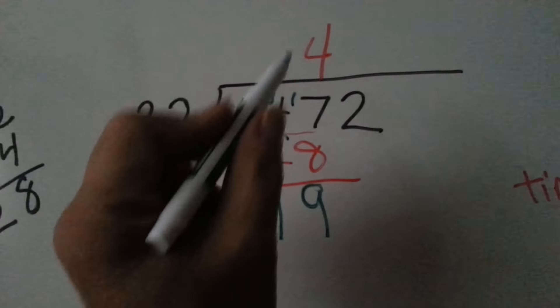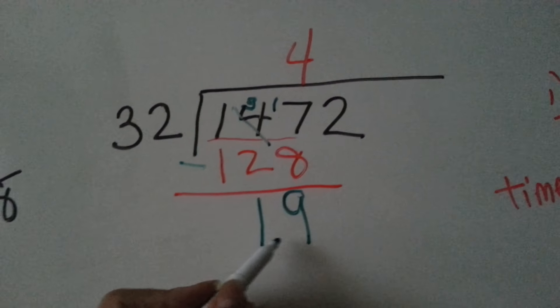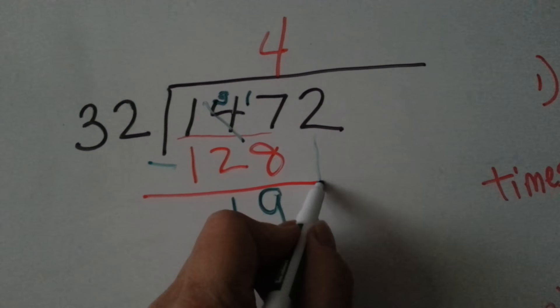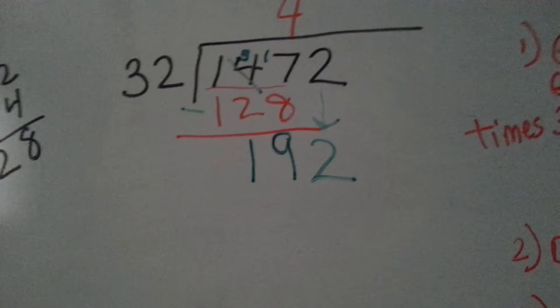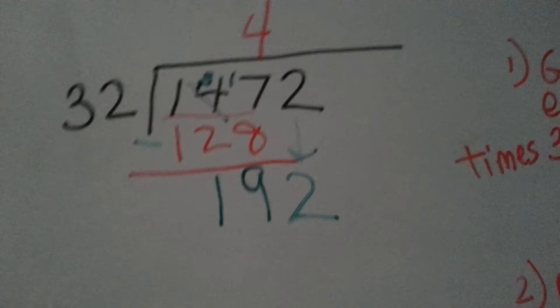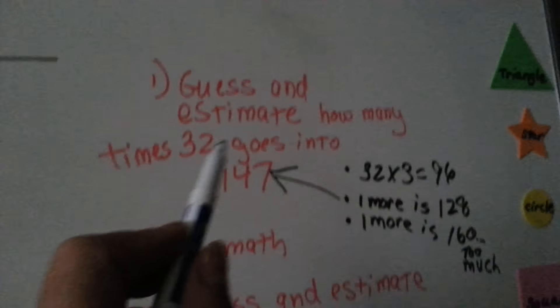Now it's the two's turn to drop down. Now we're going to do 32 into 192.